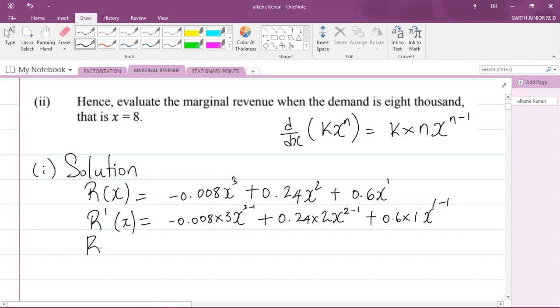So I can now say that R'(x) is going to be equal to: when I multiply these two numbers, I will get negative 0.024, and then I have x to the power of three minus one, which is two. Plus 0.24 multiplied by two will give me 0.48 times x to the power of two minus one, which is one.